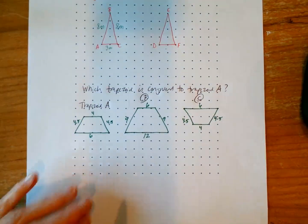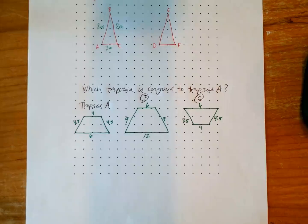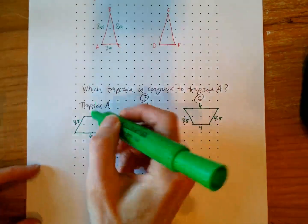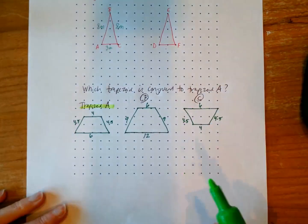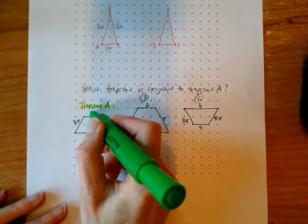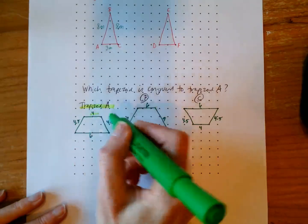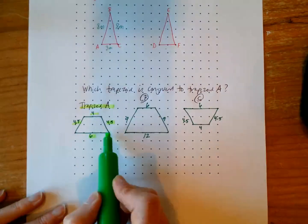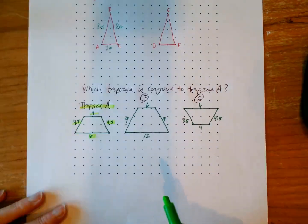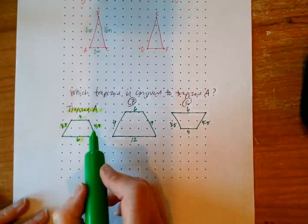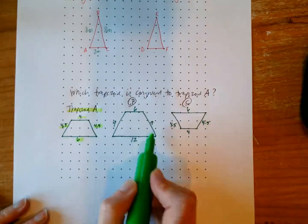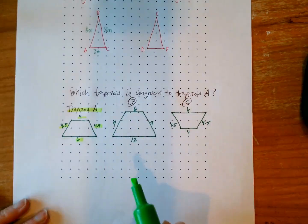And then our final question that we're going to look at is which trapezoid is congruent to trapezoid A? So if we investigate trapezoid A, we are looking for a shape that is congruent, meaning it has sides of four, four and a half, six, four and a half. You can also count the dots if you're working with dot paper, which makes it kind of nice. Here I would just trust the numbers. If the numbers aren't the same, it cannot be congruent because obviously you're going to have different lengths of sides. This one is oriented similarly on the paper, but that does not make it congruent.